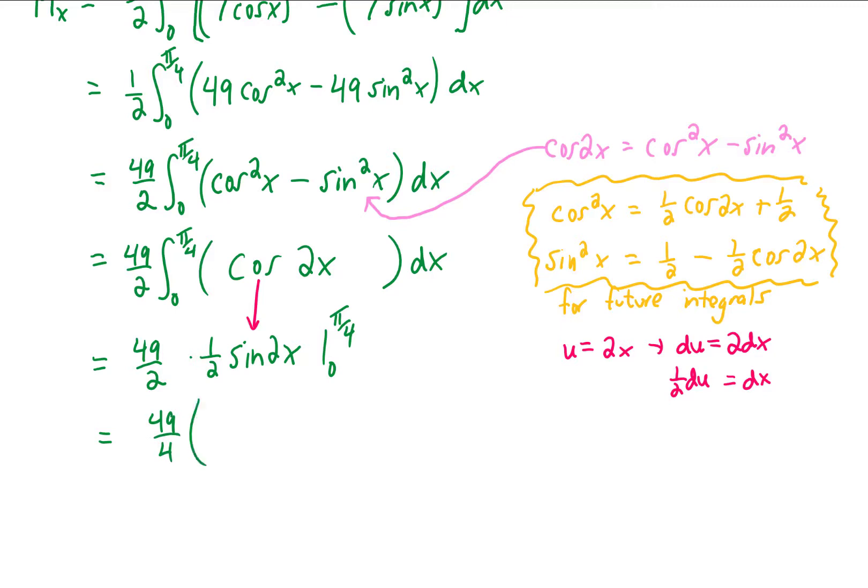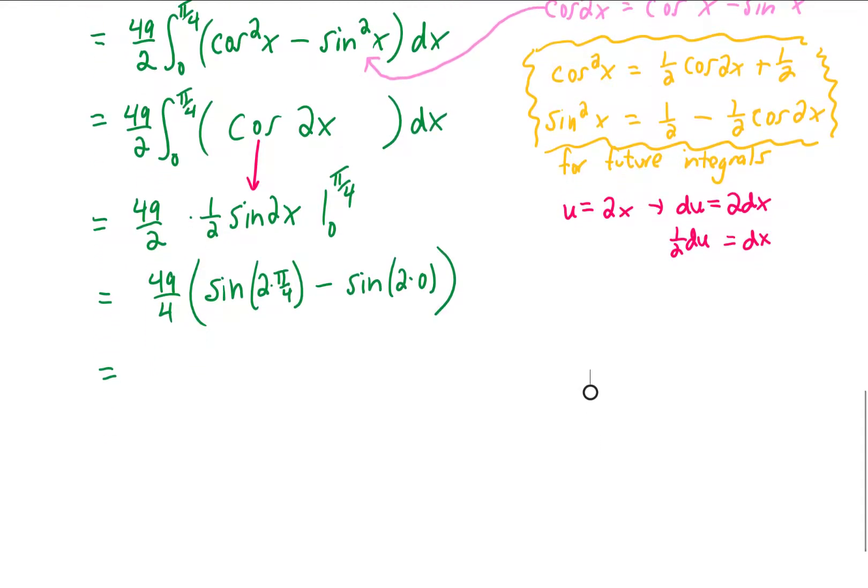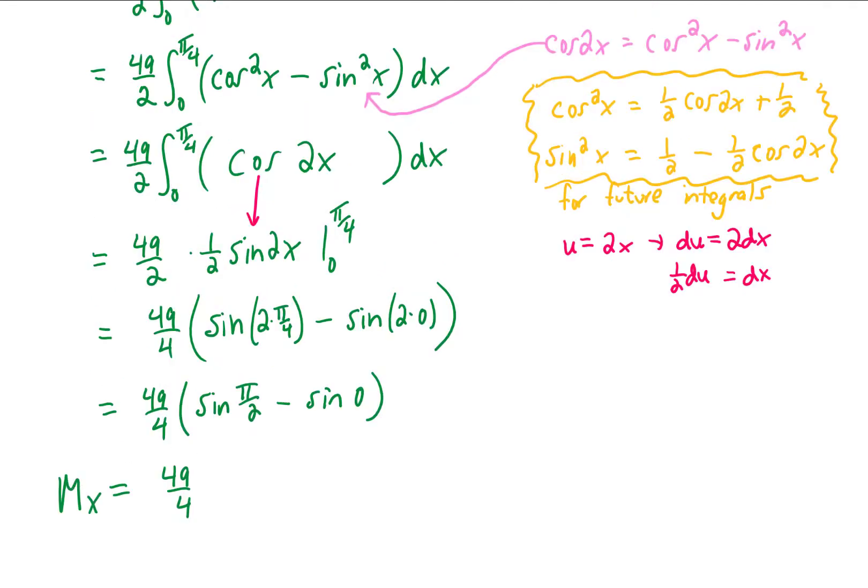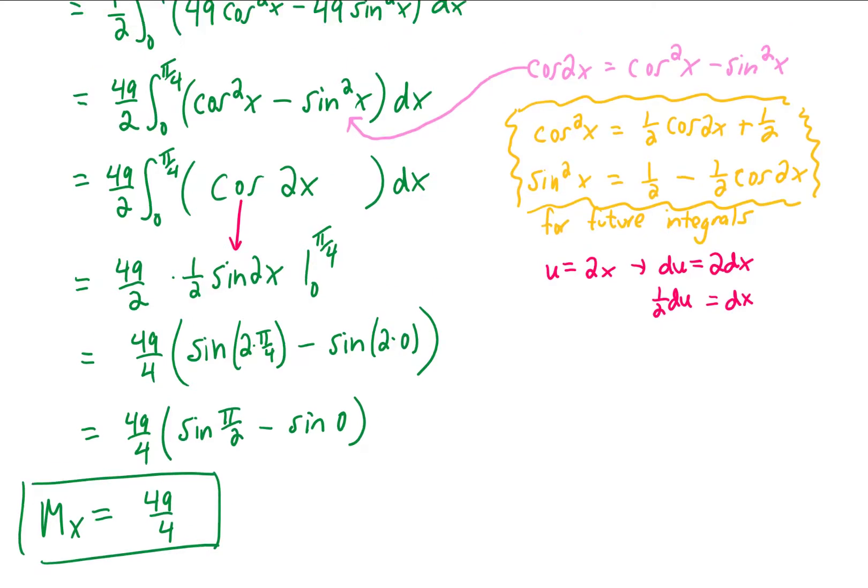We can combine fractions, and we can plug in our upper and lower limits of integration. Simplifying just a little bit, we recognize that 2 times pi over 4 is just pi over 2. 2 times 0 is, of course, 0. And sine of pi over 2 is just 1. So our result for this piece, this m sub x, is 49 fourths. And finally,